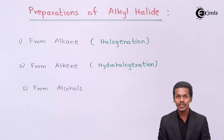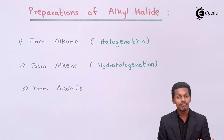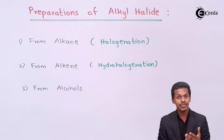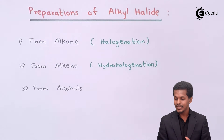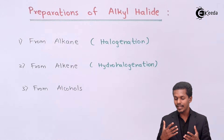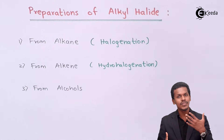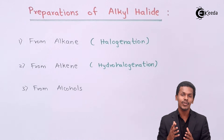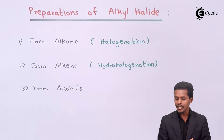The reagents that can be used include PCl3, PBr3, and thionyl chloride. There are various methods to prepare an alkyl halide from an alcohol using these different reagents, and we are going to discuss those in detail in the next lecture.